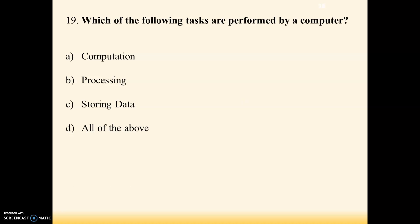Next question: which of the following tasks are performed by a computer? Options are computation, processing, storing data, all of the above. All options are correct here — option D, all of the above, is the correct answer. A computer is used to process data given by the user; the processor processes it and generates output in the required format.